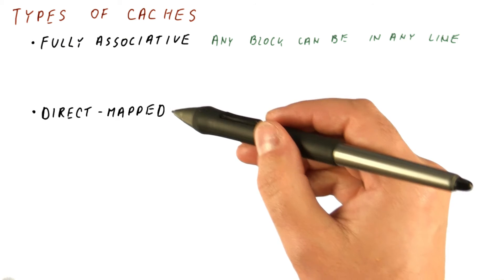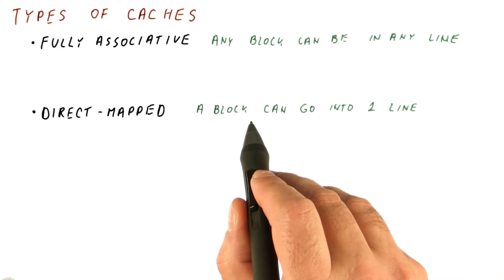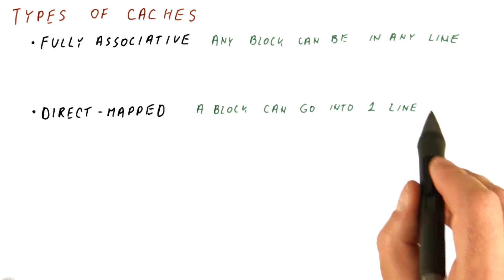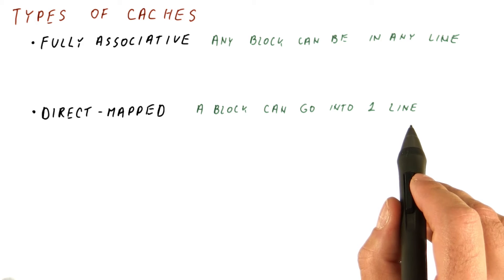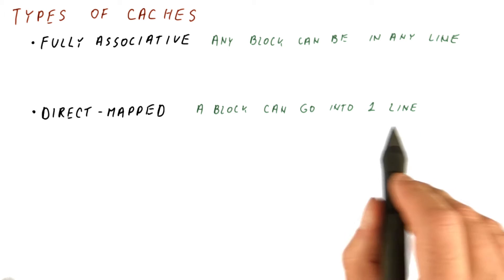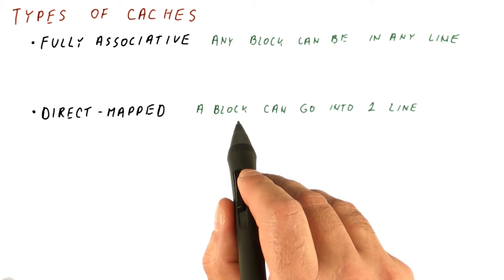The opposite of that is a direct-mapped cache where for a given block, there is exactly one place in the cache where that block can go. That means we only need to check one line in the cache because that's the only line where it can possibly be.